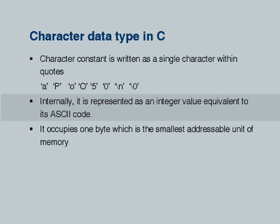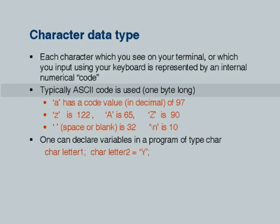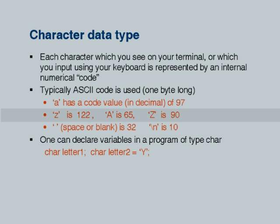Internally it is represented as an integer and it occupies one byte in our storage, which is the smallest addressable unit of memory. Typically the representation of characters is done using an ASCII code. You are all familiar with ASCII code, but we will tell our students that it is one byte long and these are typical decimal values of the ASCII code for some well-known characters — alphabets capital A to capital Z.